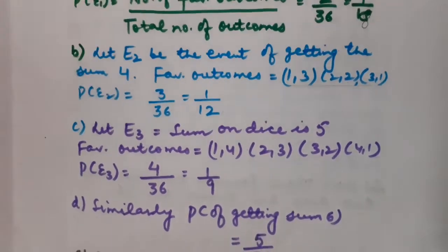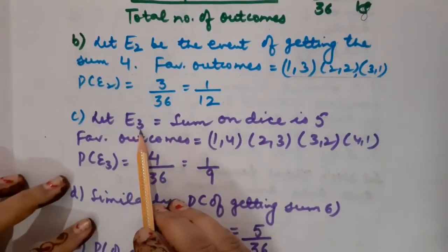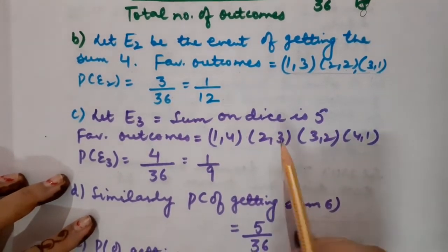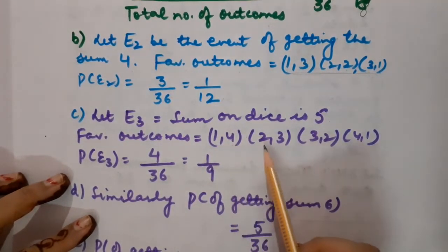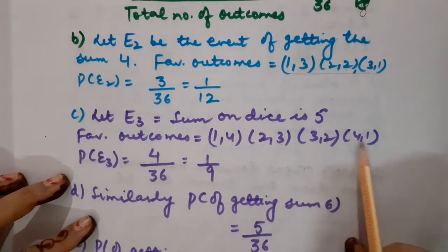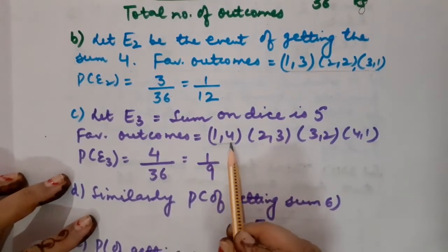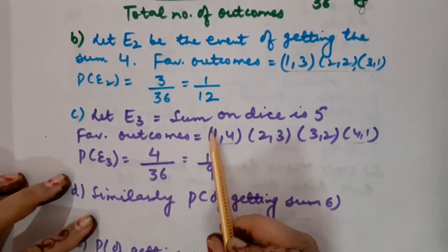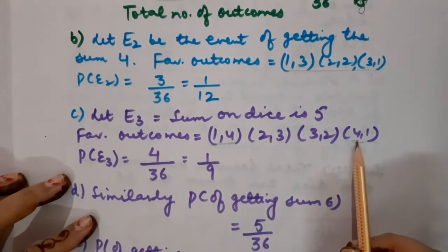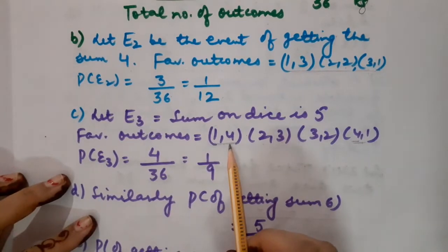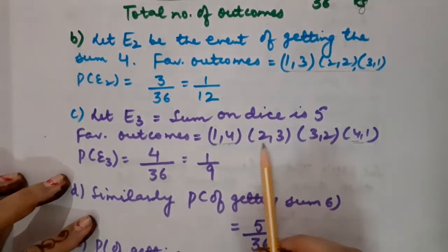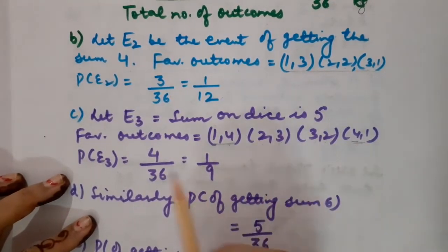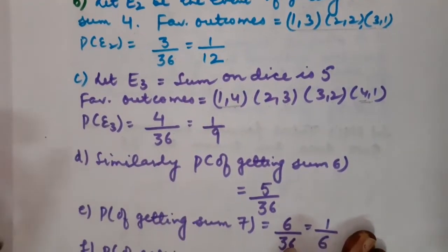Let E3 be the event of getting the sum as 5. The favorable outcomes are (1,4), (2,3), (3,2), and (4,1). Note that (1,4) is different from (4,1) — in one case the first die shows 1, in the other it shows 4. Similarly (2,3) is different from (3,2). So all 4 are included, giving probability 4/36, which equals 1/9.